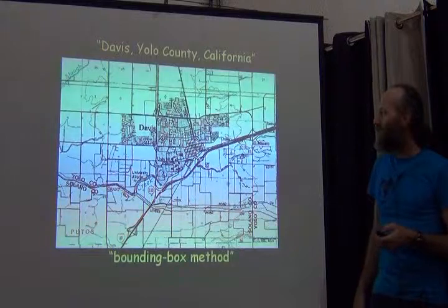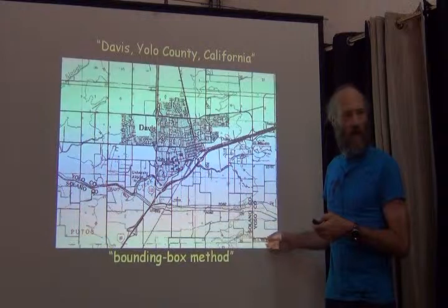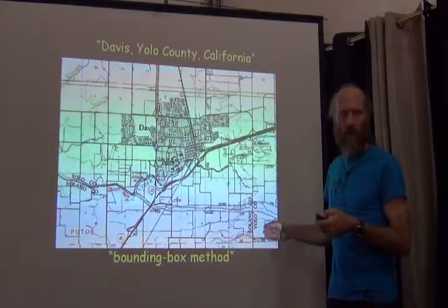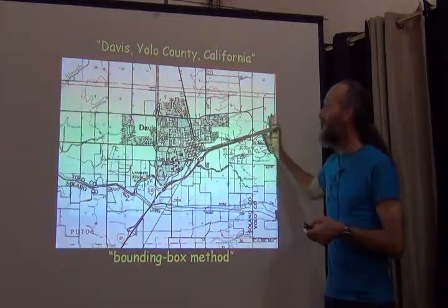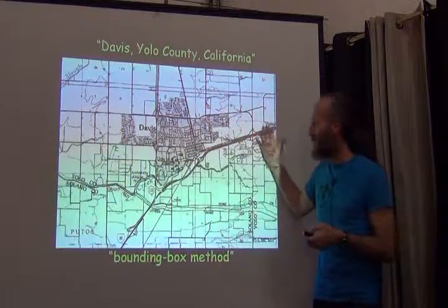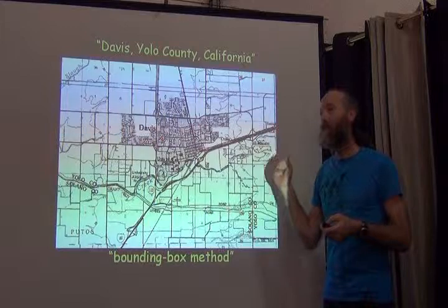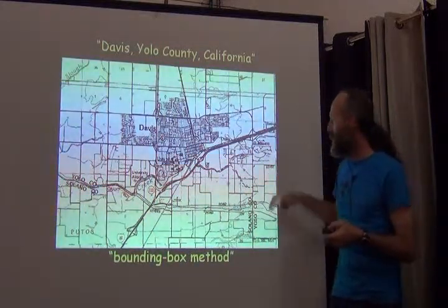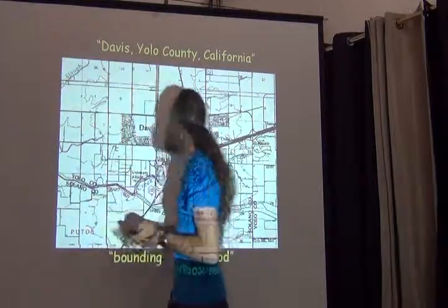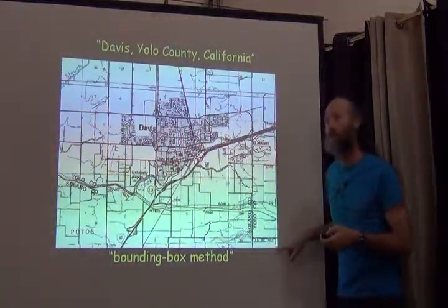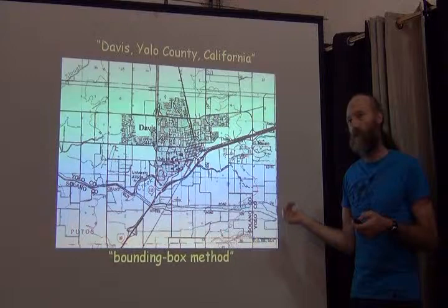One of the ways that we can describe a georeference is a bounding box method. Unfortunately, my bounding box doesn't show up here. The bounding box method provides a set of coordinates for each of the corners of a map. To describe the bounding box, we need two coordinates — the northwest corner and the southwest corner.